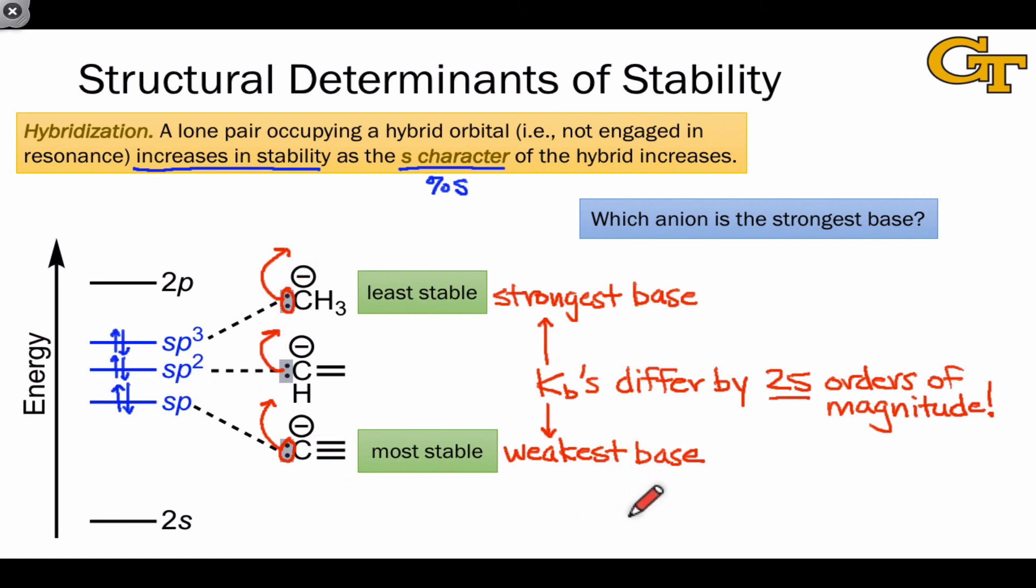One last thing to mention is that as we've seen for the other stability trends, this is other things being equal. Resonance issues and issues of electronegativity being off the table, in other words, looking at the same type of atom, the same element, without differences in resonance stabilization, we can identify this trend in the stability of electrons as a function of their hybridization.